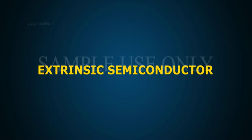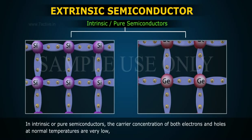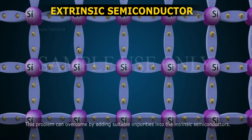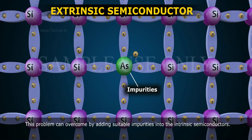Extrinsic semiconductors. In intrinsic or pure semiconductors, the carrier concentration of both electrons and holes at normal temperatures are very low. Hence, to get appreciable current density through the semiconductor, a large electric field should be applied. This problem can be overcome by adding suitable impurities into the intrinsic semiconductors.